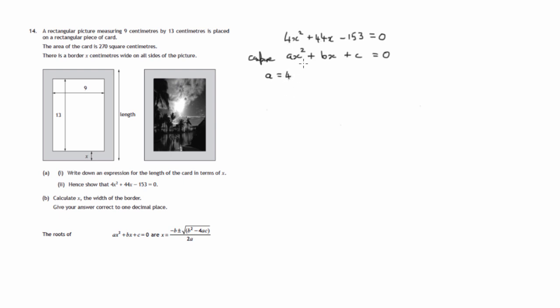a, in particular, is 4. There's 4 lots of x². b is 44, there being 44 lots of x, and the constant term c, in this case is, don't forget the negative, it's negative 153.